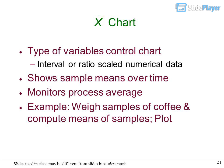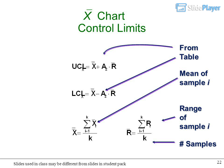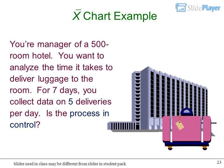X-chart: Type of variables control chart shows sample means over time. Uses interval or ratio scaled numerical data, monitors process average. Example: weigh samples of coffee and compute means of samples. Plot X-chart control limits from table using mean of sample i, range of sample i, and number of samples.